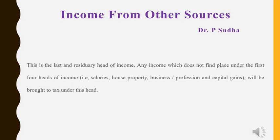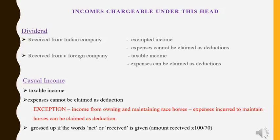The last head is income from other sources. Under this head, income which does not fit into the definition of the other 4 heads will be charged. That is why this head is called the last and residuary head of income. Any income which does not fit into the first 4 heads will be brought to tax under this head. The first income chargeable under other sources is dividend — an income earned by a shareholder of a company out of its distributable profits. It is not salary, house property, business, or capital gains, so it is taxed under other sources.